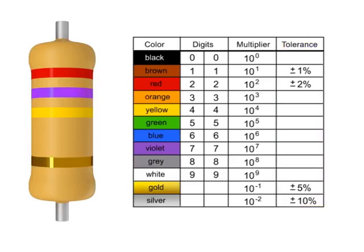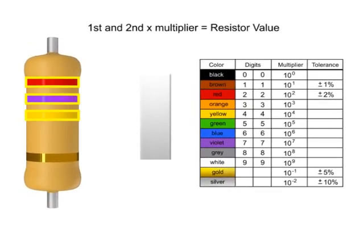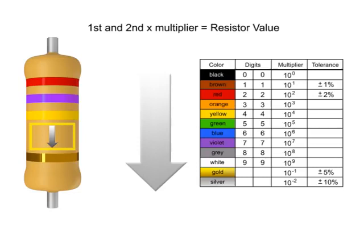You read resistor bands beginning with the end that has the most bands. A space between the third and fourth bands also indicates the reading direction.